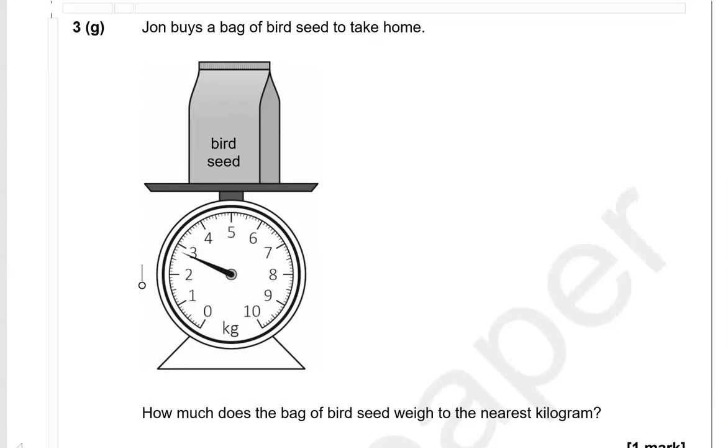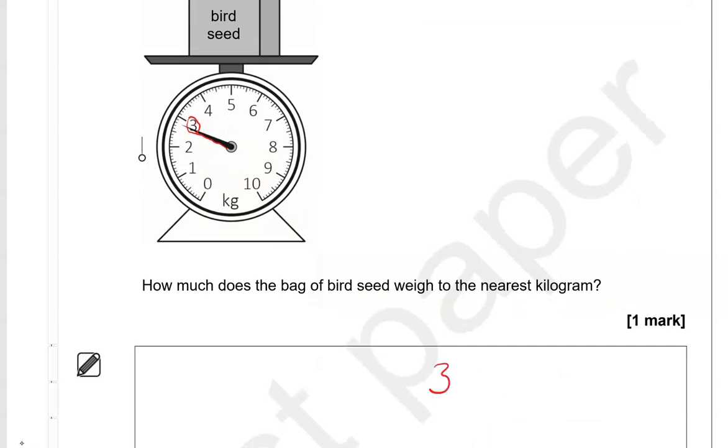John buys a bag of birdseeds to take home. How much does the bag of birdseeds weigh to the nearest kilogram? So as you can see, that is very close to 3 kilograms. It's in between 2 and 3, but much closer to 3 than it is to 2. So we're going to write 3.